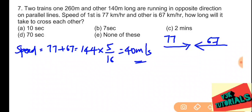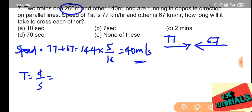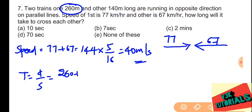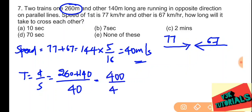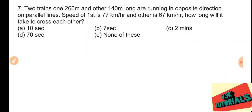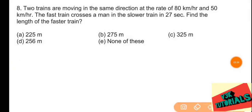Time equals distance divided by speed. Total distance is 260 plus 140 equals 400 meters. Speed is 40 meters per second. So time equals 400 divided by 40, which gives 10 seconds. So 10 seconds is the correct answer.